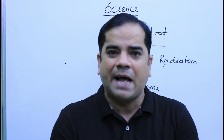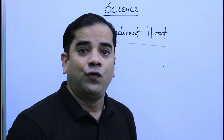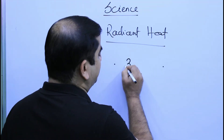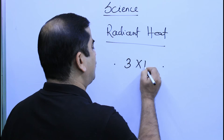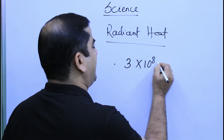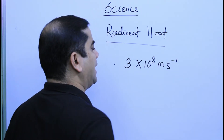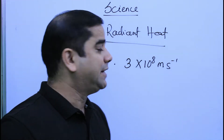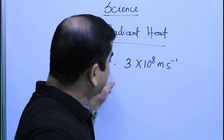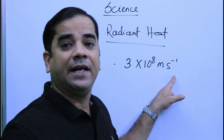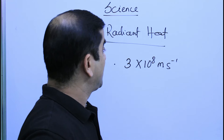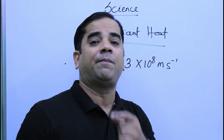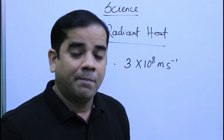These are some examples of radiation. We know that light travels at the speed of 3 × 10⁸ metres per second. Radiation also travels at the same speed in vacuum or air, and it also carries properties of light.